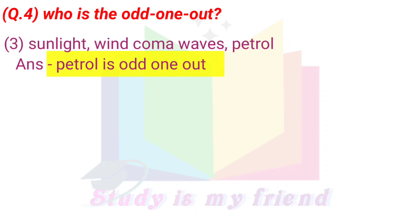3. Sunlight, wind, waves, petrol. Answer: Petrol is the odd one out.